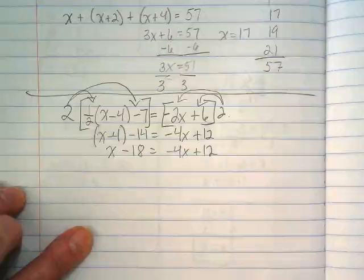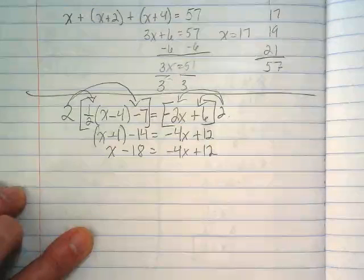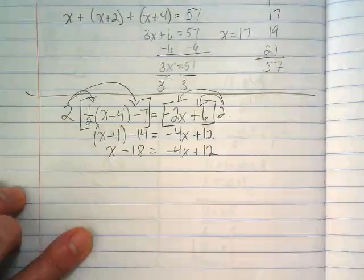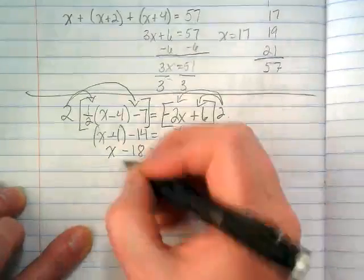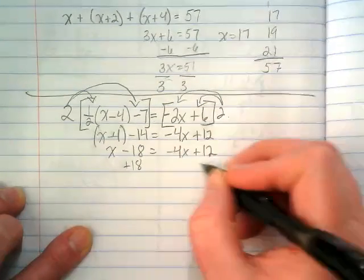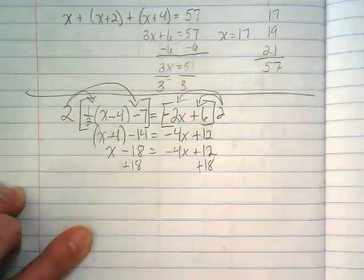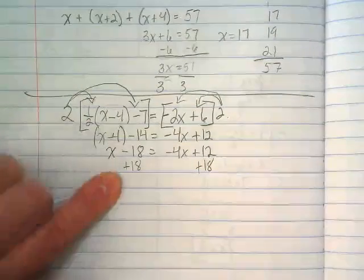And now we have to combine like terms across the equal sign, which means doing inverse operations. I'm going to add the 18. Why did I pick the 18? Because it's a negative, and I like working with positives more.